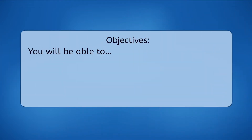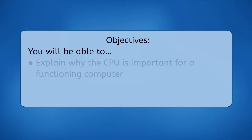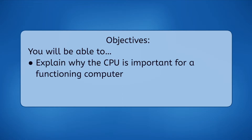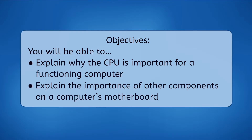In this lesson, you'll learn about the computer's brain, along with several other crucial parts that work together with it, all of which are found on the computer's motherboard. By the end of this lesson, you will be able to explain why the CPU is so important for a functioning computer, and explain the importance of other components on a computer's motherboard. Let's get into it.